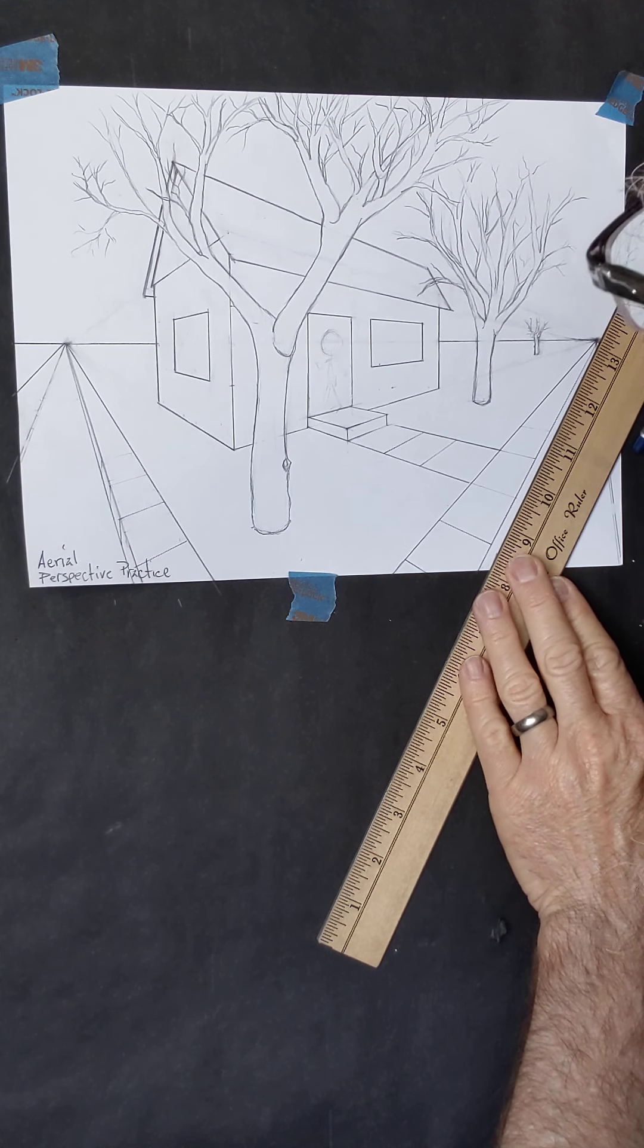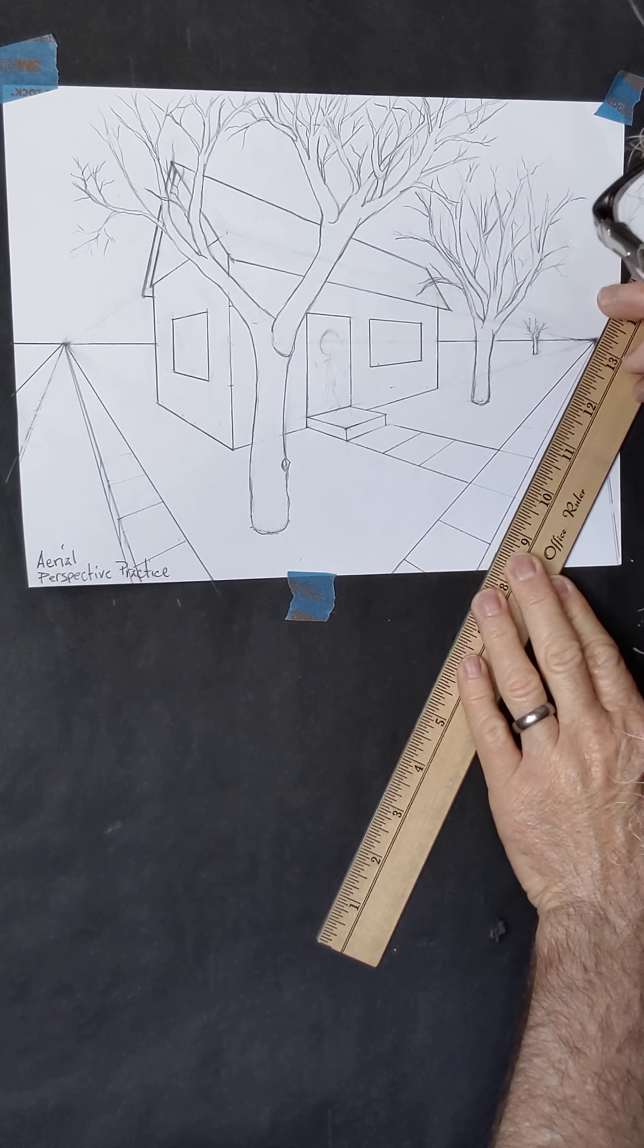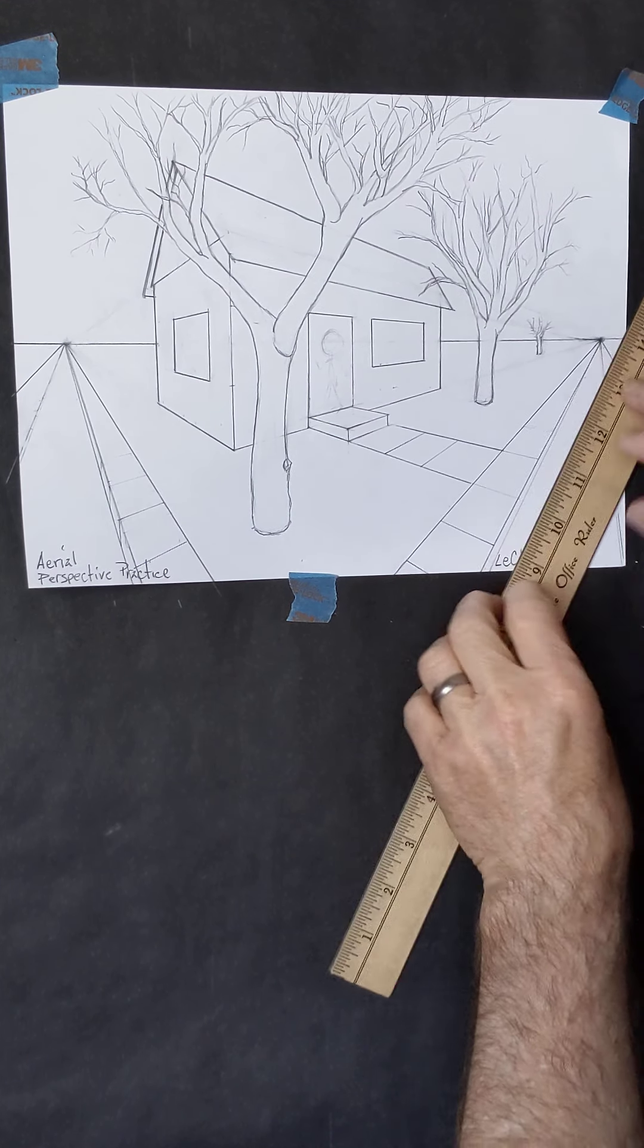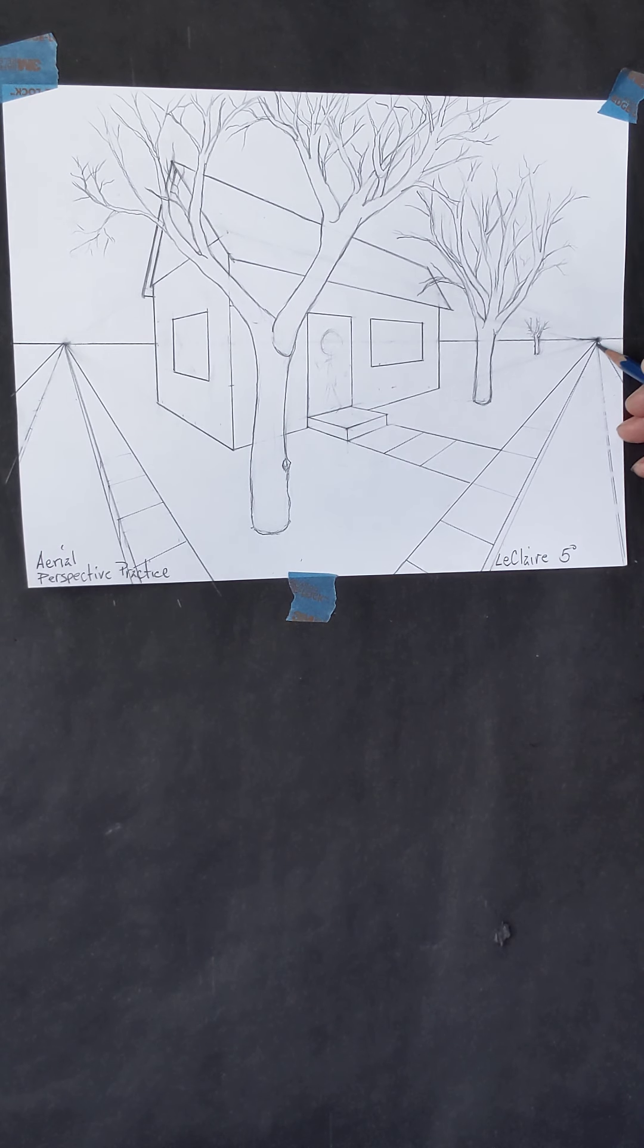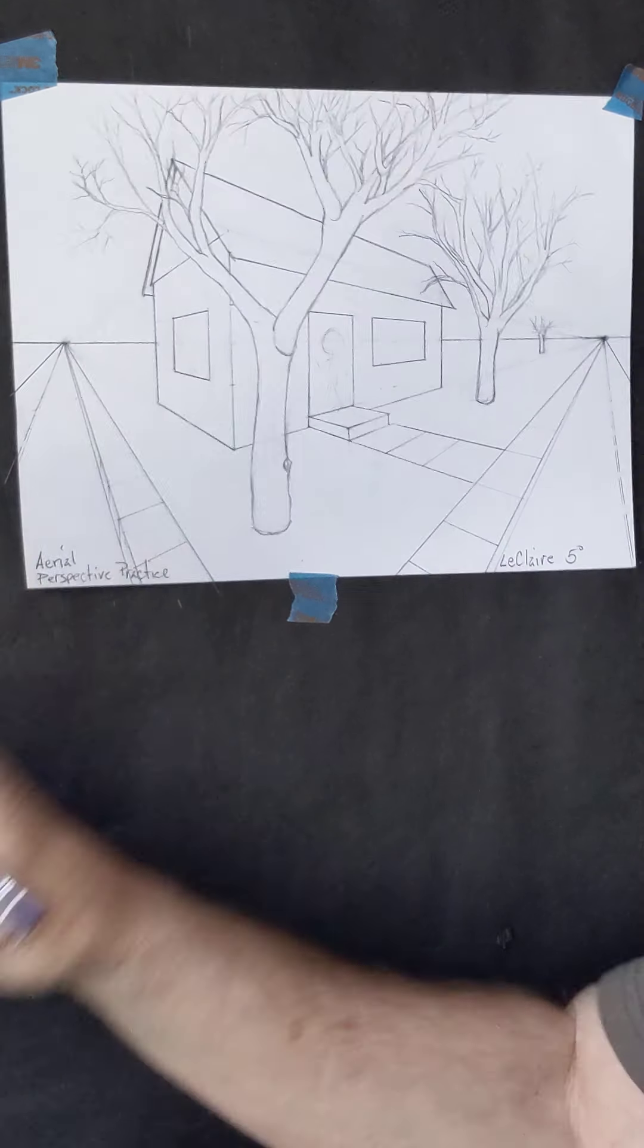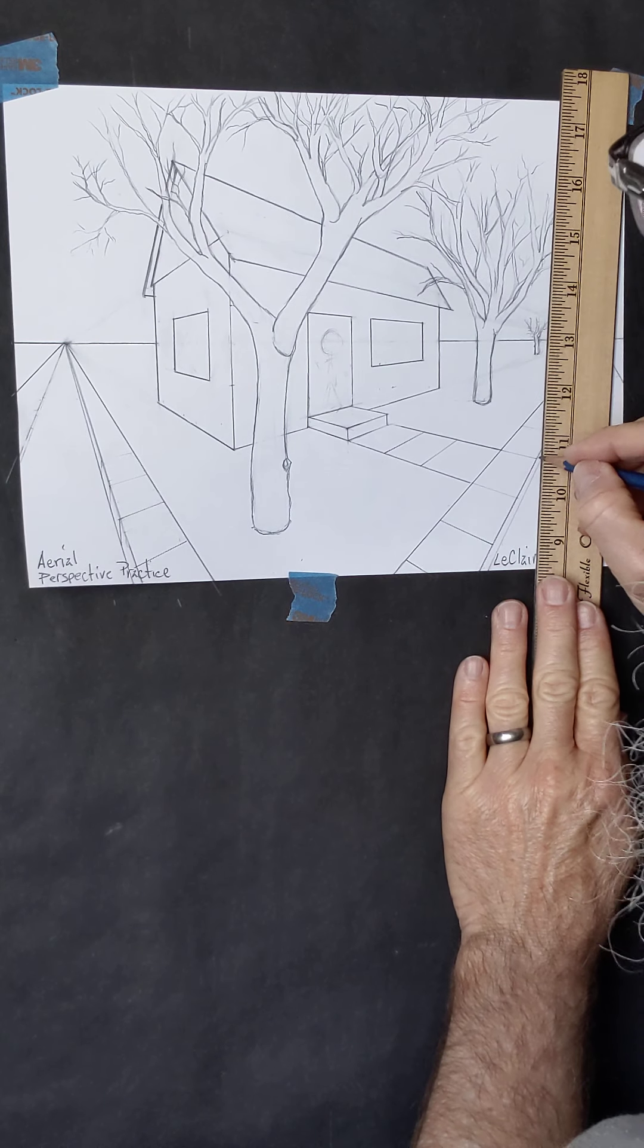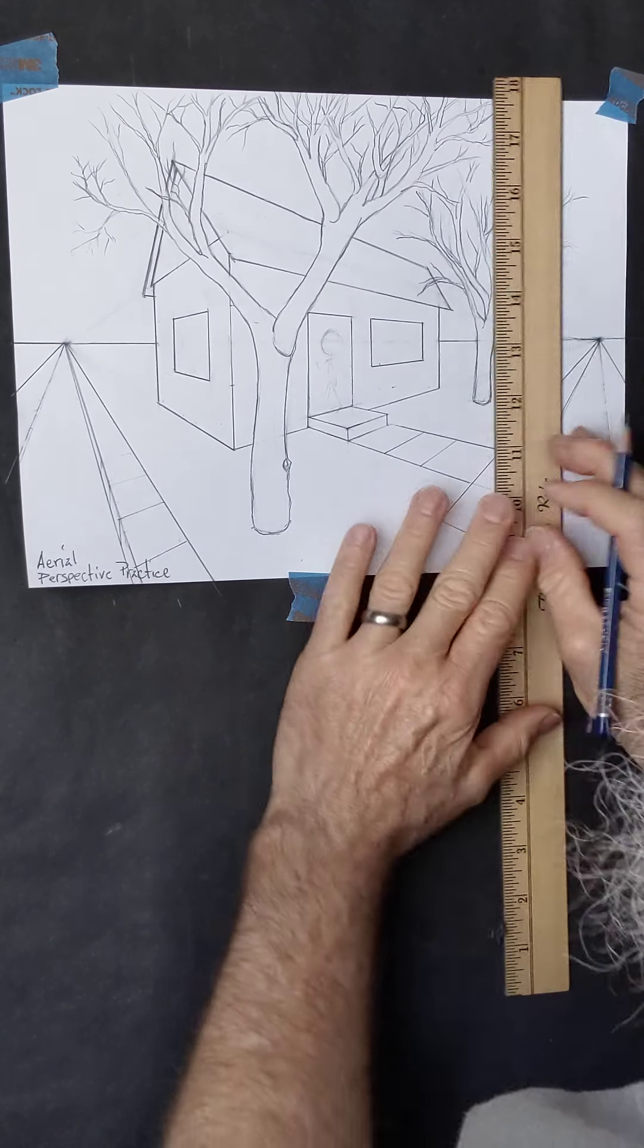I just draw a line going back to that same vanishing point where all the edges of the sidewalk meet. Now it kind of disappears as it gets into that space because it's so far away it just kind of merges into it. And once again I can take a vertical line going down, I'll move it over to this side so I can see what I'm doing.